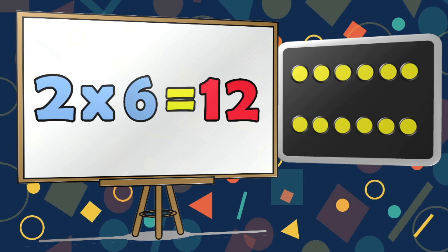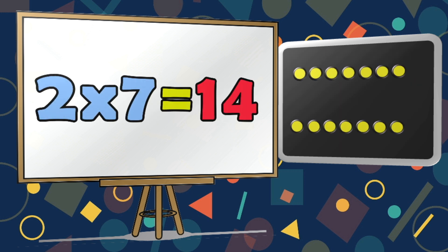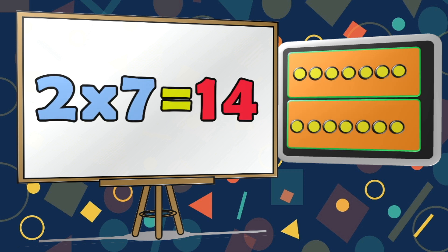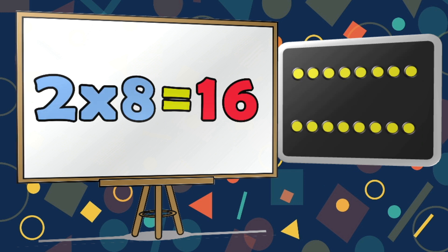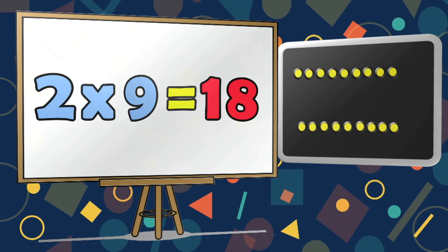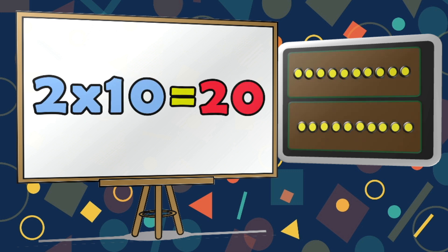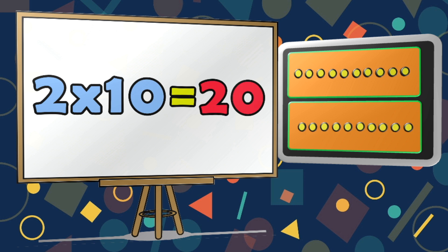2 multiplied by 6 is equal to 12. 2 multiplied by 7 is equal to 14. 2 multiplied by 8 is equal to 16. 2 multiplied by 9 is equal to 18. 2 multiplied by 10 is equal to 20.